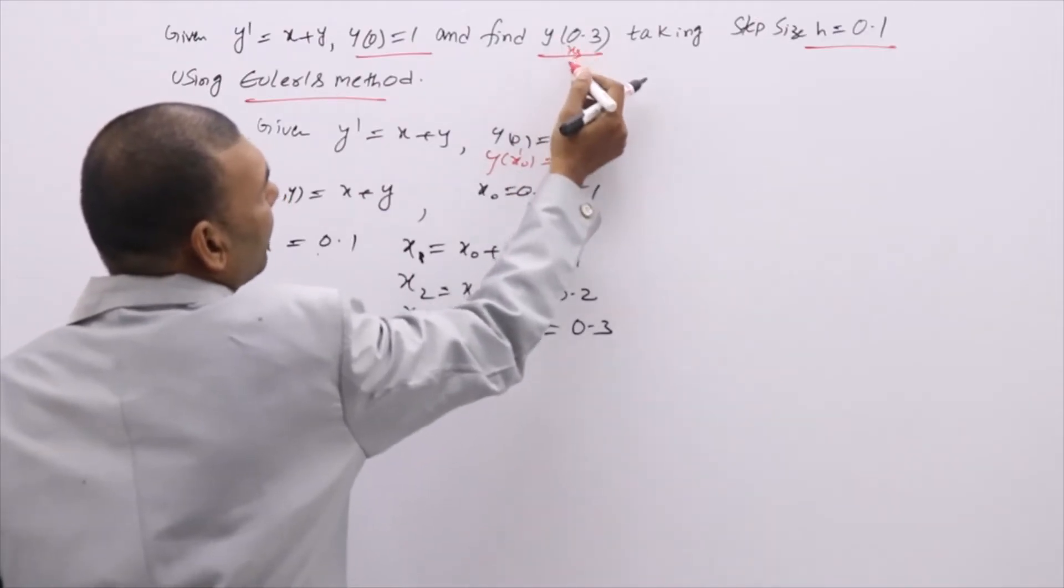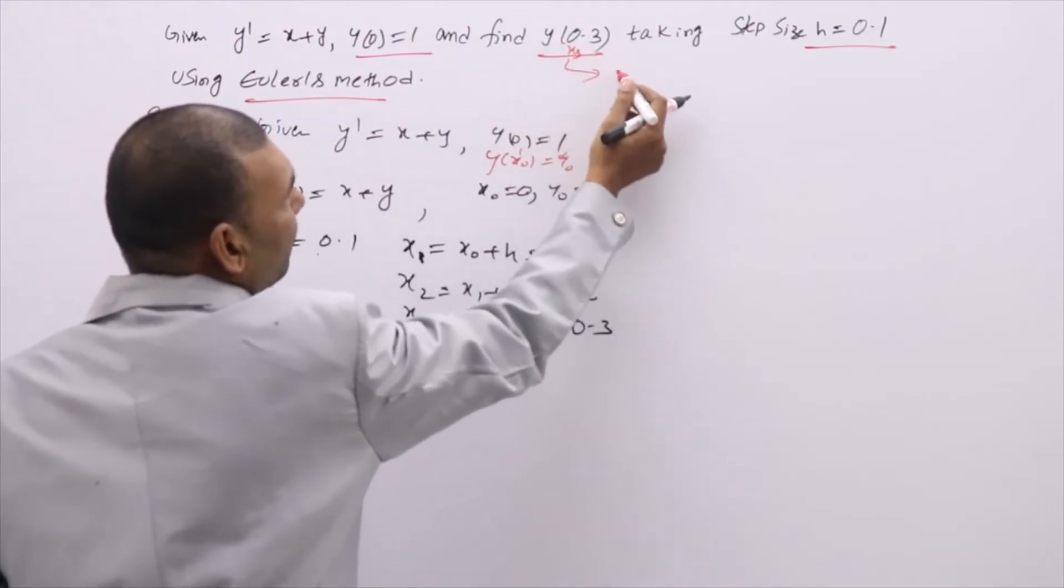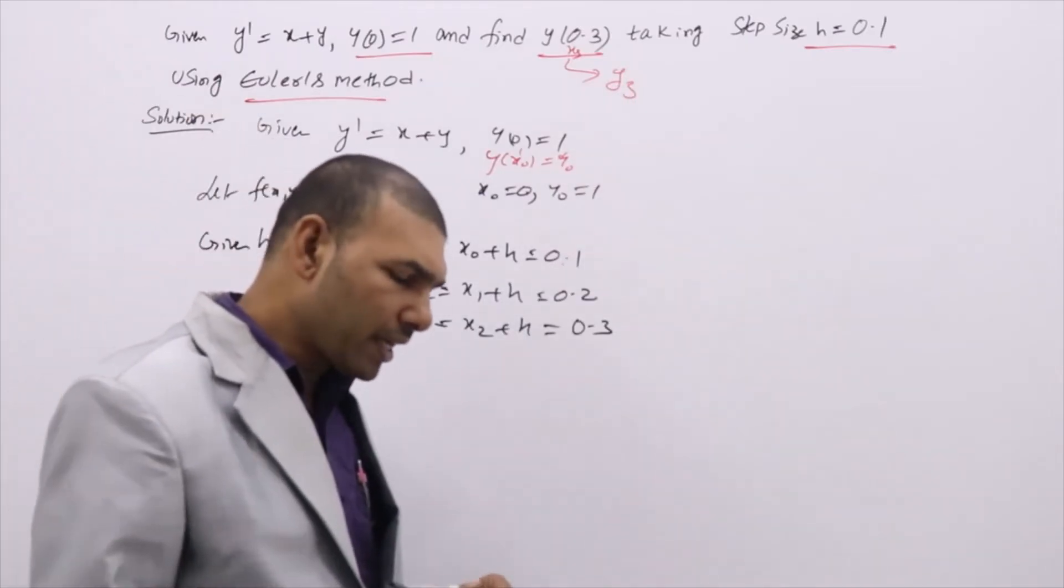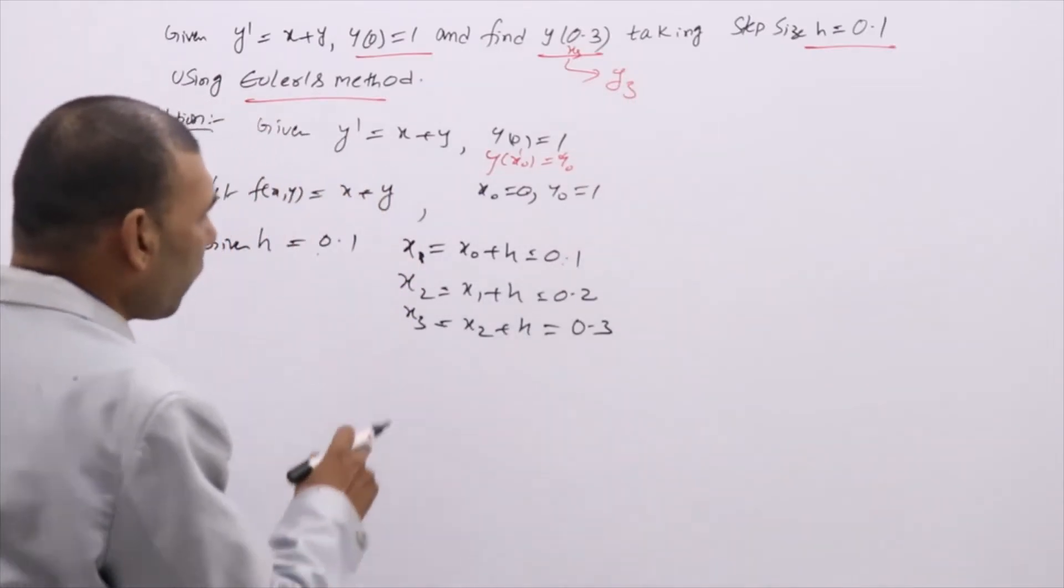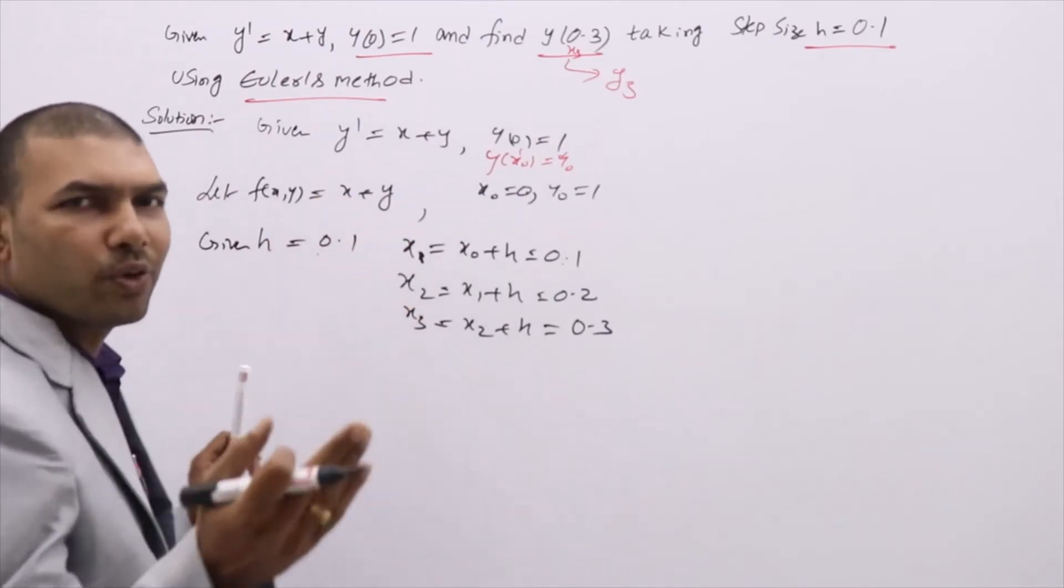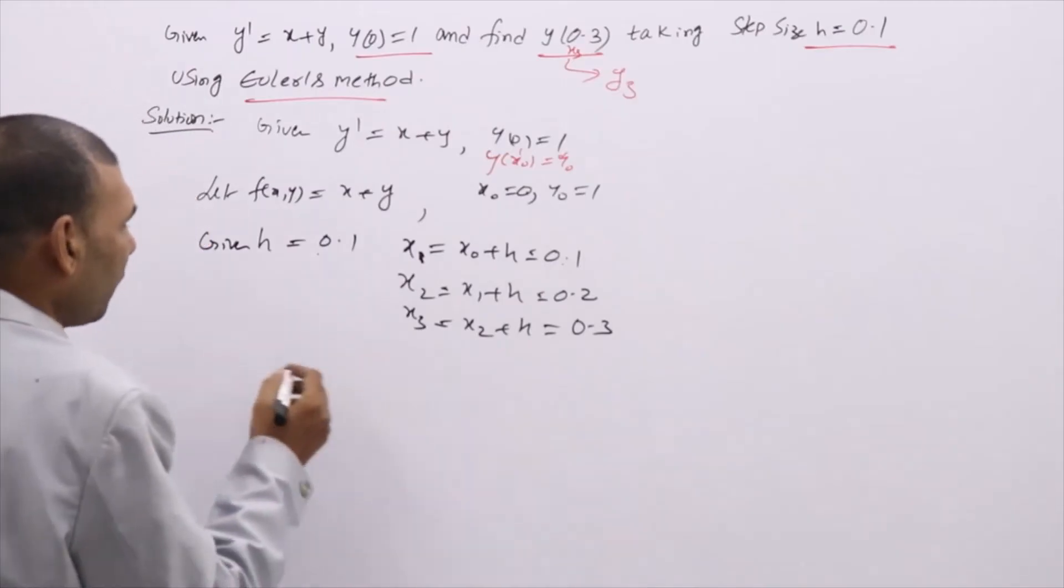that means y(0.3) means x₃ is 0.3. y(x₃) we need to find, y(x₃) means y₃ we need to find. But we cannot get y₃ directly. If you want y₃ you need y₂. If you want y₂ you need y₁. That means y₁, y₂, y₃, three we need to evaluate. For that,